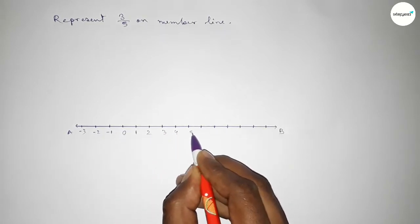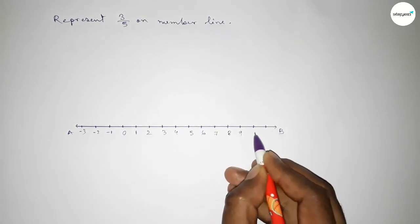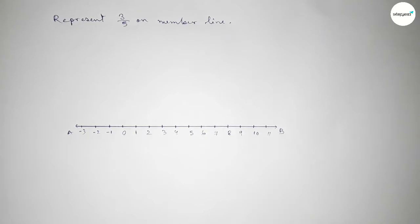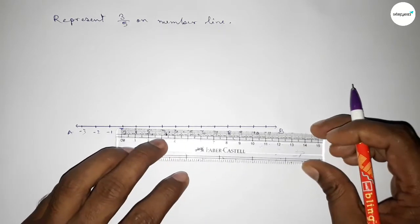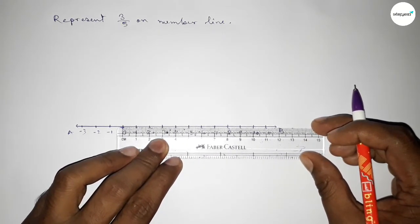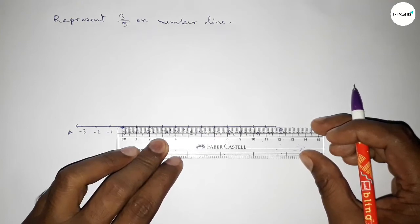Now dividing the distance between any two number. If we divide the distance between any two number into five parts, then the length of each part is 0.2 unit.